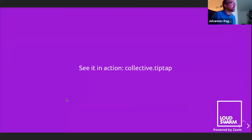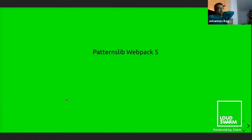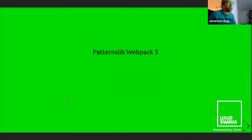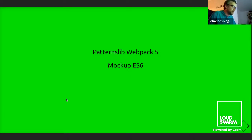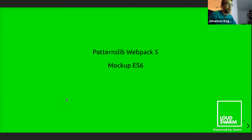We're almost at the end. The outlook — what still needs to be done: patternslib needs webpack 5 support; there's already a branch almost ready but it needs more testing, and all external patternslib add-ons need to be migrated to webpack 5 as well. We need mockup ES6, which is quite far along — not fully ready, tests aren't all passing, not all patterns migrated, but I'd say 80–90% is done. One bigger remaining item is the file editor migration. Then the whole module federation setup needs to be tested and improved.